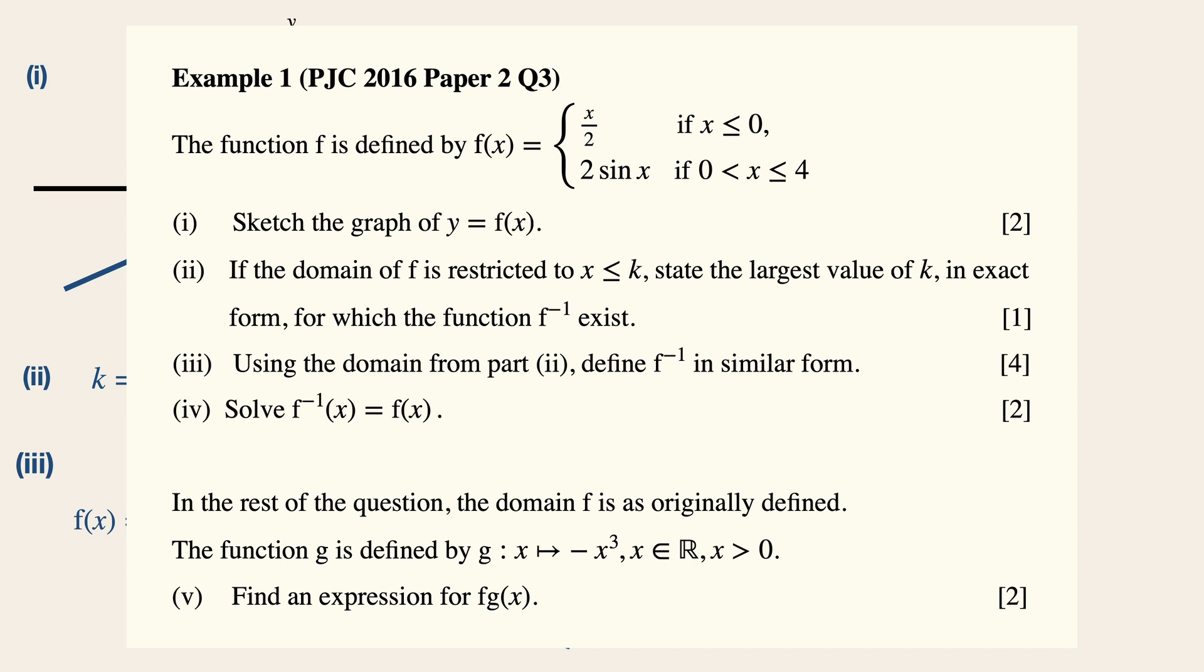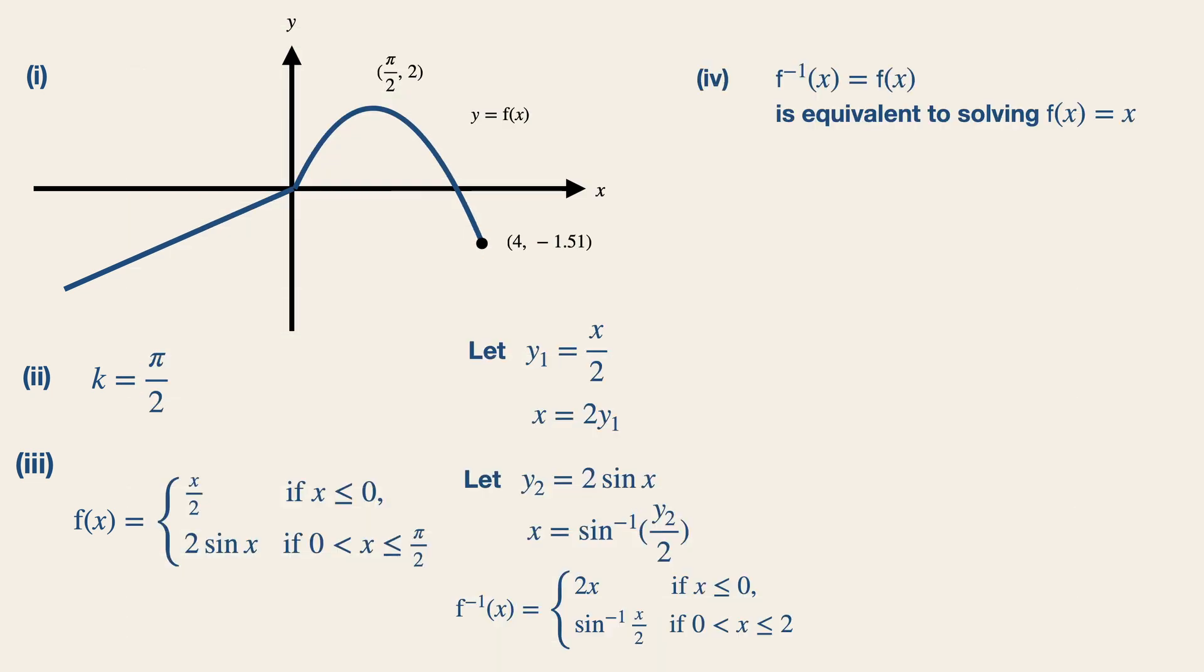Now let's move on quickly to part 4, which is a very common question that we all must know. In order to solve this, it is the same as solving fx is equals to x. Now the graph of fx is a reflection of the f inverse graph along the line y equals to x. Thus we are able to do this: x over 2 is equals to x, and by solving, the value of x is equals to 0.